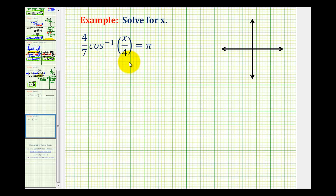We want to solve the given trig function for x. We'll start by isolating the inverse cosine function by multiplying both sides of the equation by the reciprocal of four sevenths, which is seven fourths.